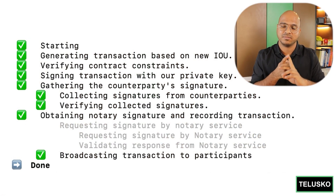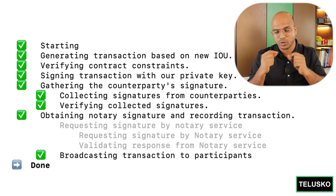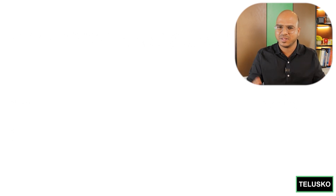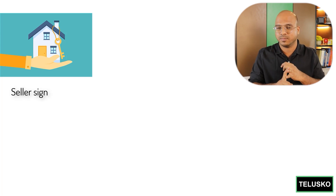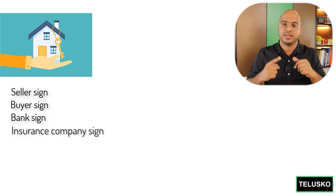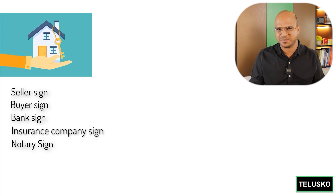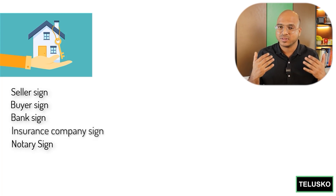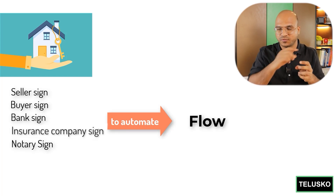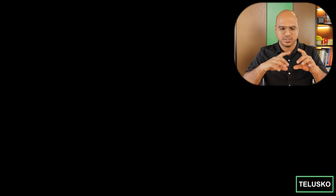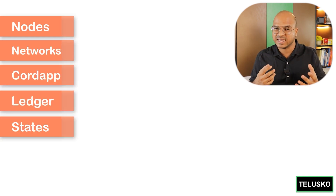We have state, and when you want to update it, you do a transaction. But one thing is missing — when you have so many steps in a transaction, the sender proposes the transaction, the other party agrees, the sender signs, the receiver signs, and then it goes for further verification. For example, buying a house: the buyer signs, the bank signs, the insurance company signs, the notary signs — so many steps. You don't want to manage all these steps manually. For that, you can use flows. All these transactions are part of a flow. You can also create sub-flows for subtasks.